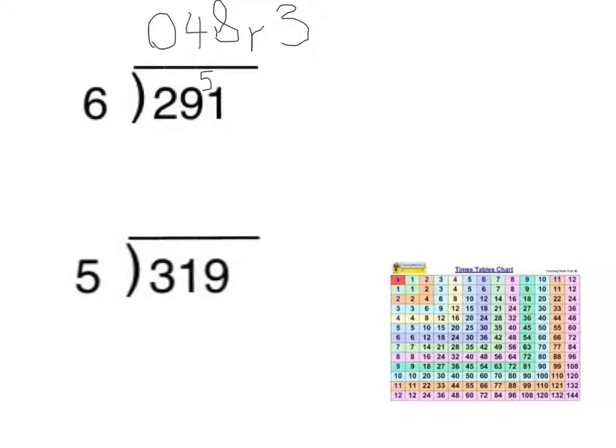I'm going to do the same thing again with my next example, which is here. So now I'm looking at 319 divided by 5. So have a look first, and I can see that 5 doesn't actually fit into 3. So now I'm looking at combining the 100's and 10's column and seeing how many times 5 fits into 31.